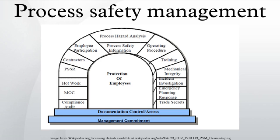The 14 elements of process safety management are: process safety information, process hazard analysis, operating procedures, training, contractors, mechanical integrity, hot work, management of change, incident investigation, compliance audits, trade secrets, employee participation, pre-startup safety review, and emergency planning and response.